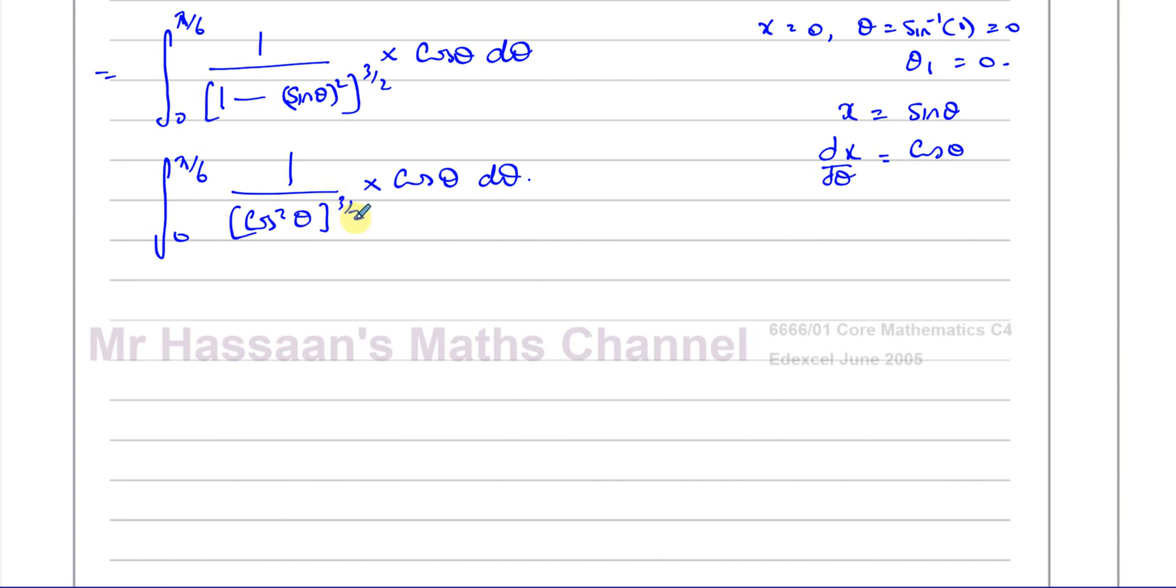Now, the square root of cosine squared theta is cosine theta, and that cubed is cosine cubed theta. So this actually gives us the integral between 0 and pi over 6 of cosine theta over cosine cubed theta d theta. And then we can simplify that to 1 over cosine squared theta d theta. And we know that 1 over cosine squared theta is the same as secant squared theta.